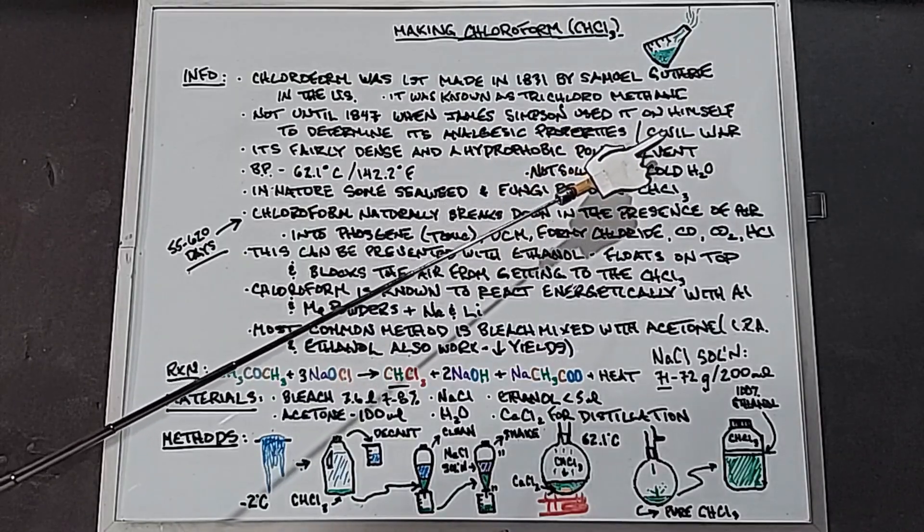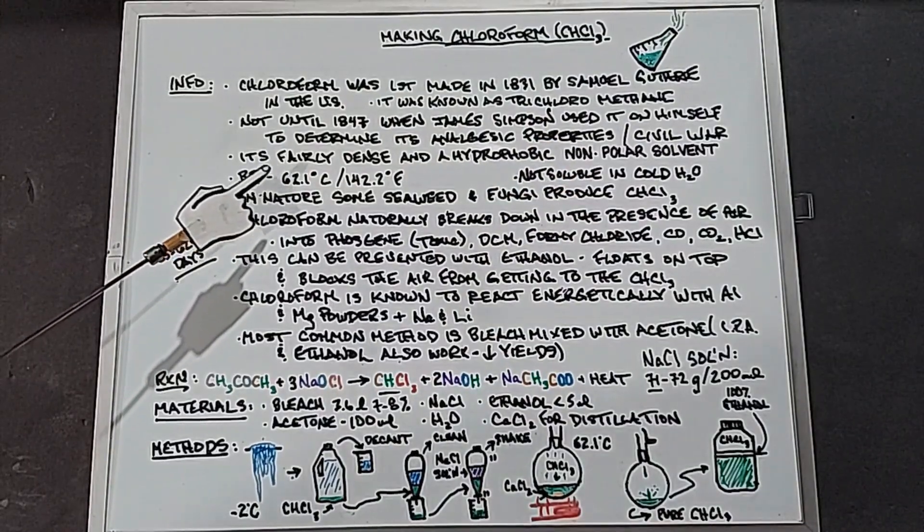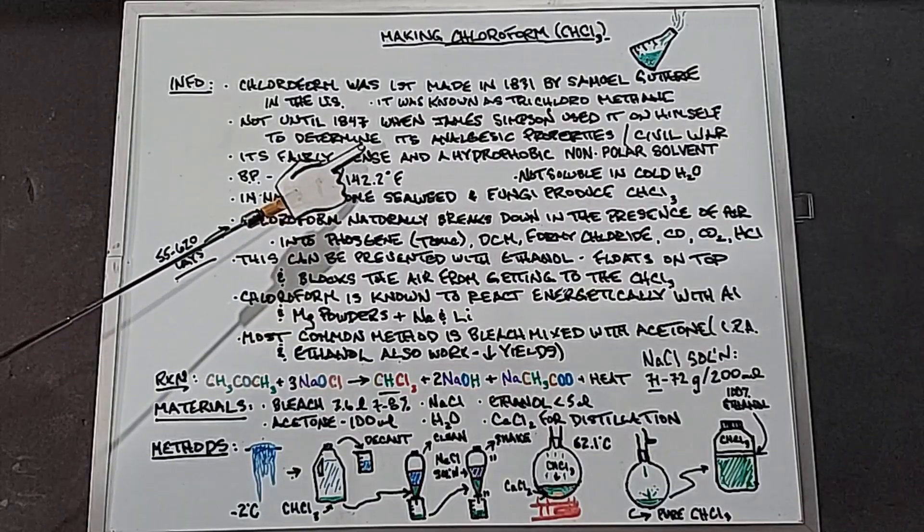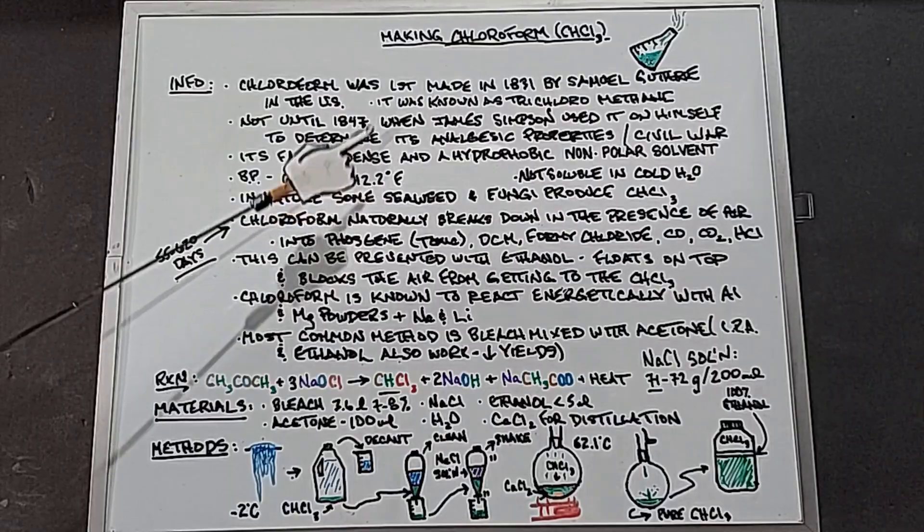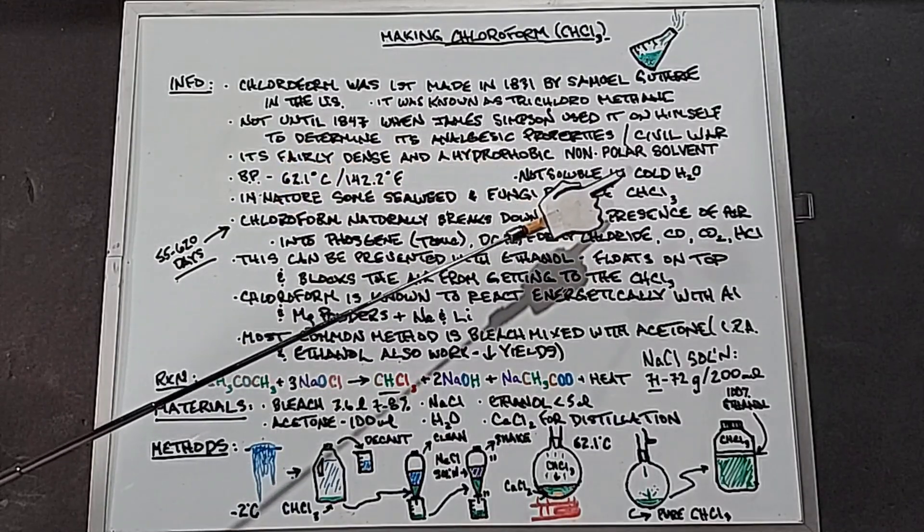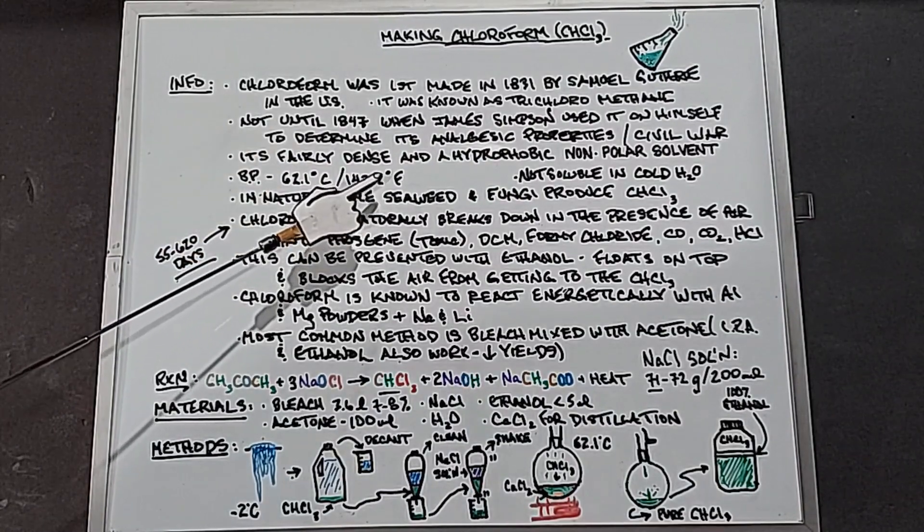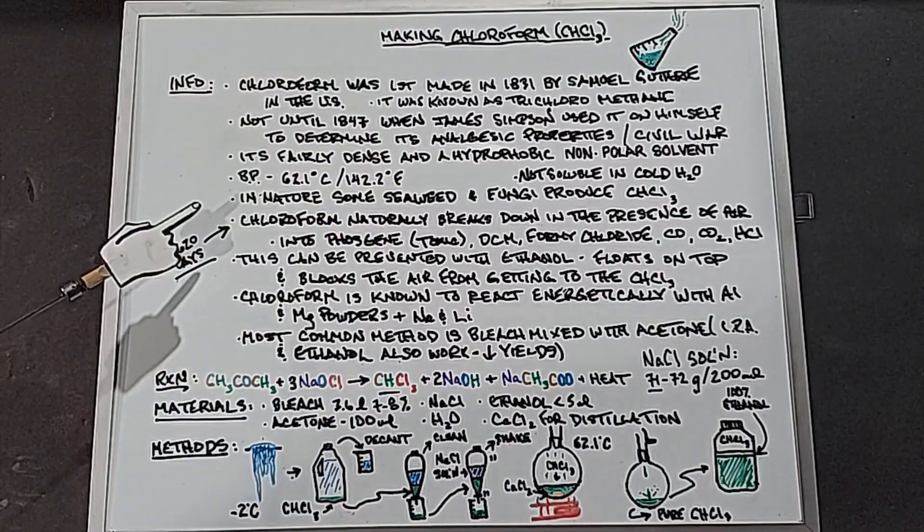Chloroform is fairly dense, it comes in at around 1.5 grams per centimeter cubed, so about 50% more dense than water. It's also hydrophobic and it's a non-polar solvent. Its boiling point is 62.1 degrees Celsius or 142.2 degrees Fahrenheit.